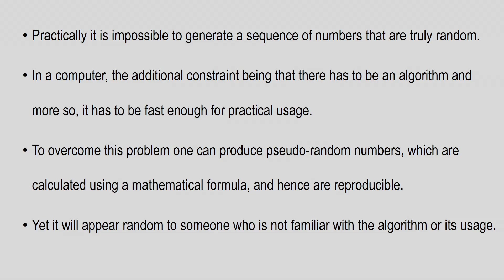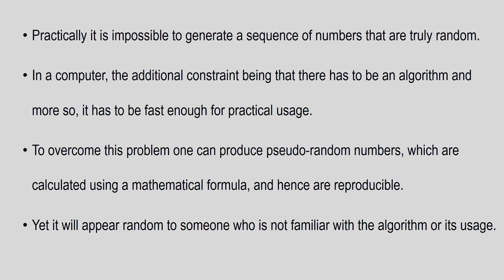The distribution of a random variable yields the probability of a random number. If you want to know what is the probability of getting a random number, that information is supplied by the distribution of the random variable. Practically, it is not possible to generate a sequence of numbers which are completely random — truly random — because in a computer there are certain algorithms which produce these random numbers. Since they follow a certain algorithm, they cannot be truly unpredictable. Additionally, the usage has to be fast enough for practical applications — the algorithm should not be too complicated.